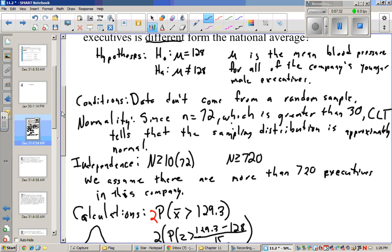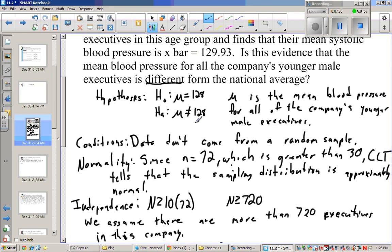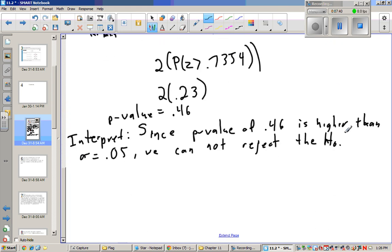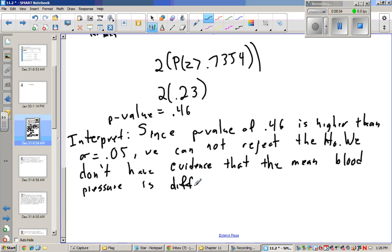So if we can't reject the null, that means we don't have evidence that this is true. So our next statement is we don't have evidence that the mean blood pressure is different for these executives.